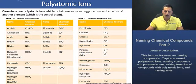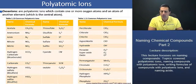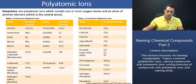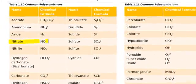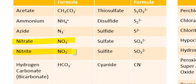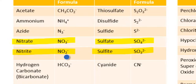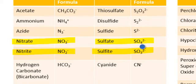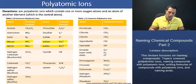Here we are. Let's begin with the definition. Oxoanions are polyatomic ions which contain one or more oxygen atoms and an atom of another element, which is the central atom. When we have two oxoanions in a series — as we see here for nitrate and nitrite, and sulfate and sulfite — note that the ITE ending is given to the polyatomic ion with fewer oxygens. The ATE ending is given to the polyatomic ion with more oxygens, as we see here.